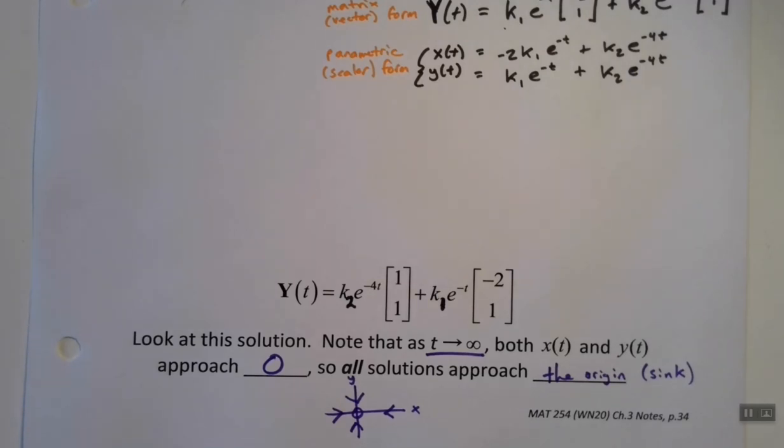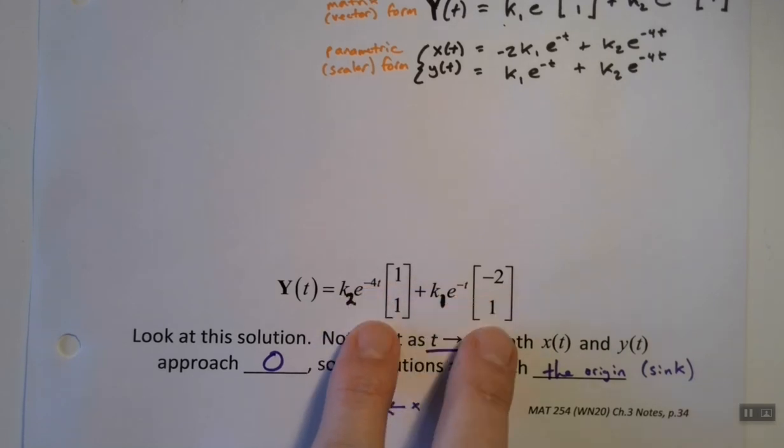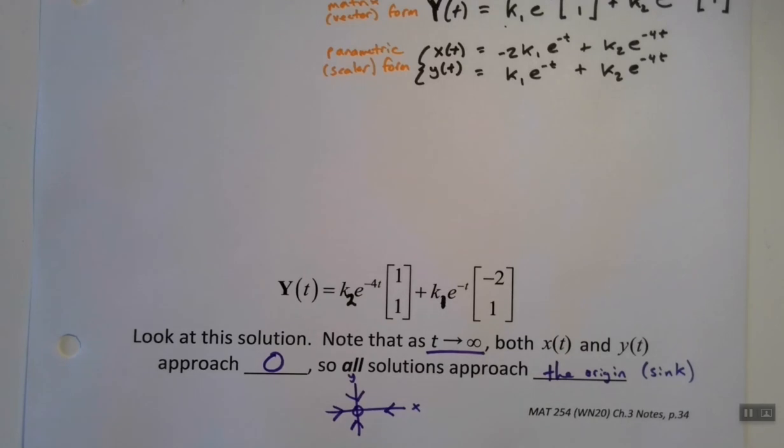So we're pretty sure we're dealing with a situation that we might refer to as a sink, where all solutions are headed towards the origin. And we can tell that just by looking at the eigenvalues because the eigenvalues were both negative, right? So the straight line solutions, whatever direction they're pointing, everything is headed towards the origin along those straight line solutions.